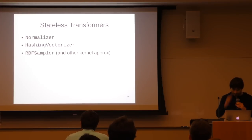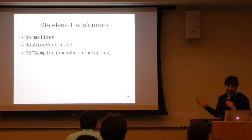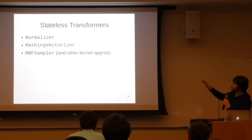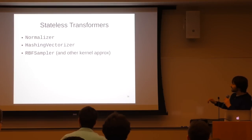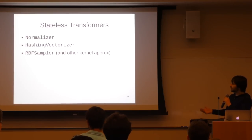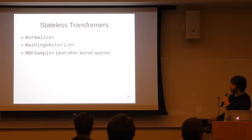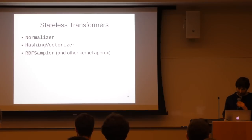Building pipelines for out-of-core learning is hard because you don't see all your data at once. One solution is to use stateless transformers — transformers that don't actually learn from data. The simplest is Normalizer, which normalizes each data point to unit length. HashingVectorizer handles out-of-core text learning. RBFSampler is a kernel approximation method. These can be used without ever seeing the rest of your data.